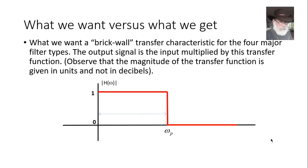The range of frequencies that pass through the filter is called the pass band, and the range that is rejected is called the stop band. Between them we have the cutoff frequency, also called the edge of the pass band or the threshold frequency. The transition region between pass band and stop band is vertical, like a brick wall — that only happens in an ideal filter. In a real filter, that transition is gradual.